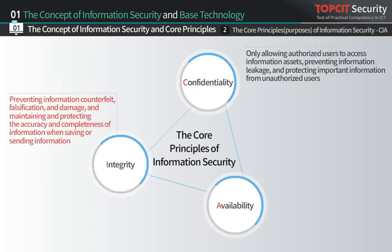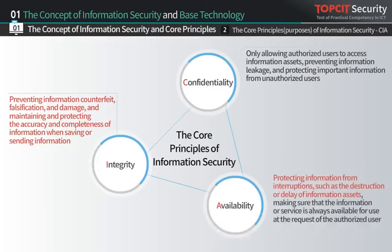Integrity means protecting information by maintaining accuracy and completeness, not allowing illegal counterfeit, falsification, and damage when saving or sending information. Lastly, availability is protecting information from interruptions such as the destruction or delay of information assets, making sure that the information or service is always available for use at the request of the authorized user.